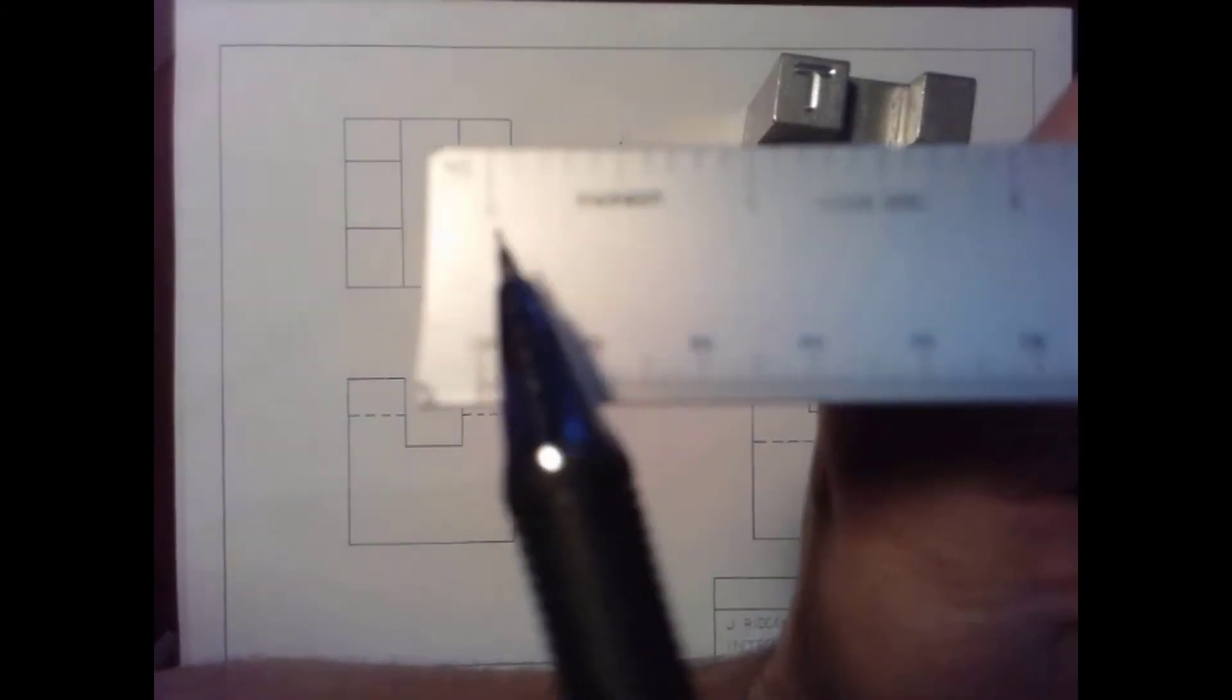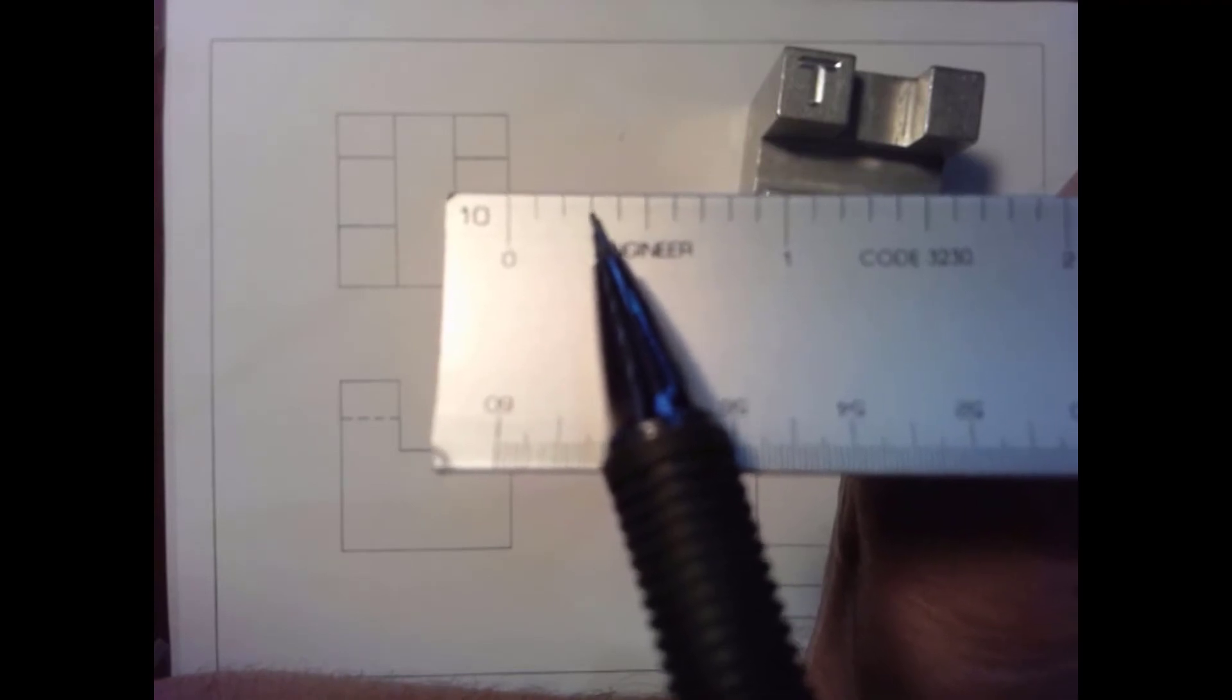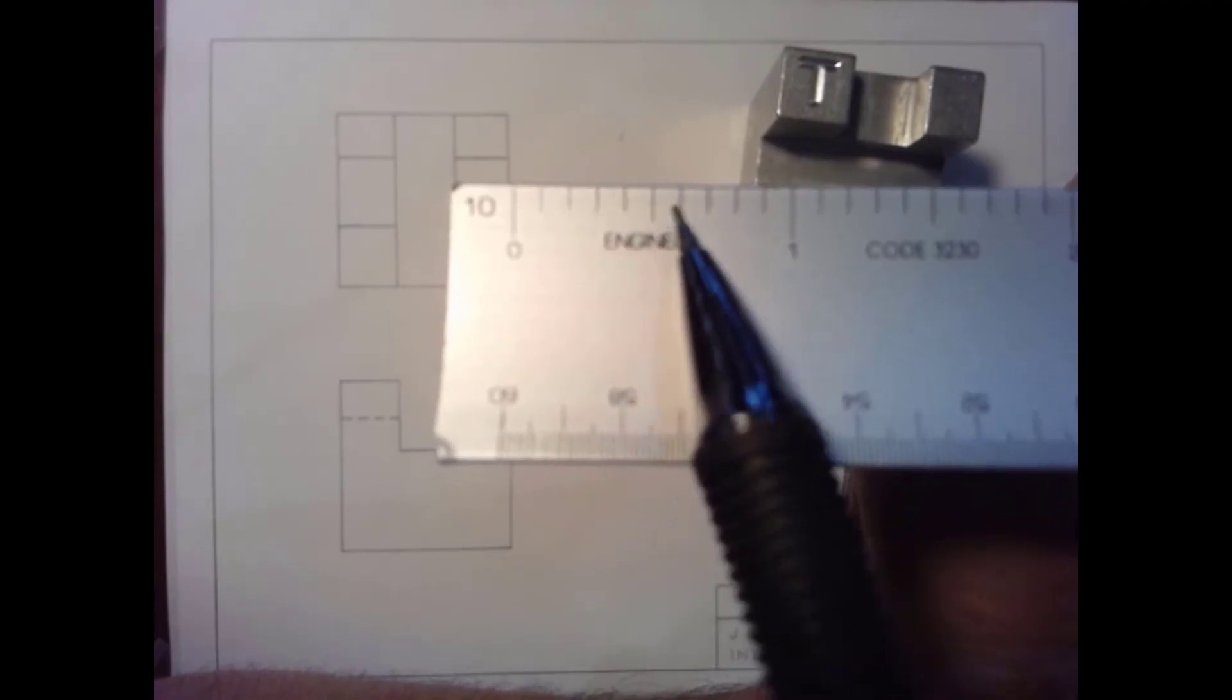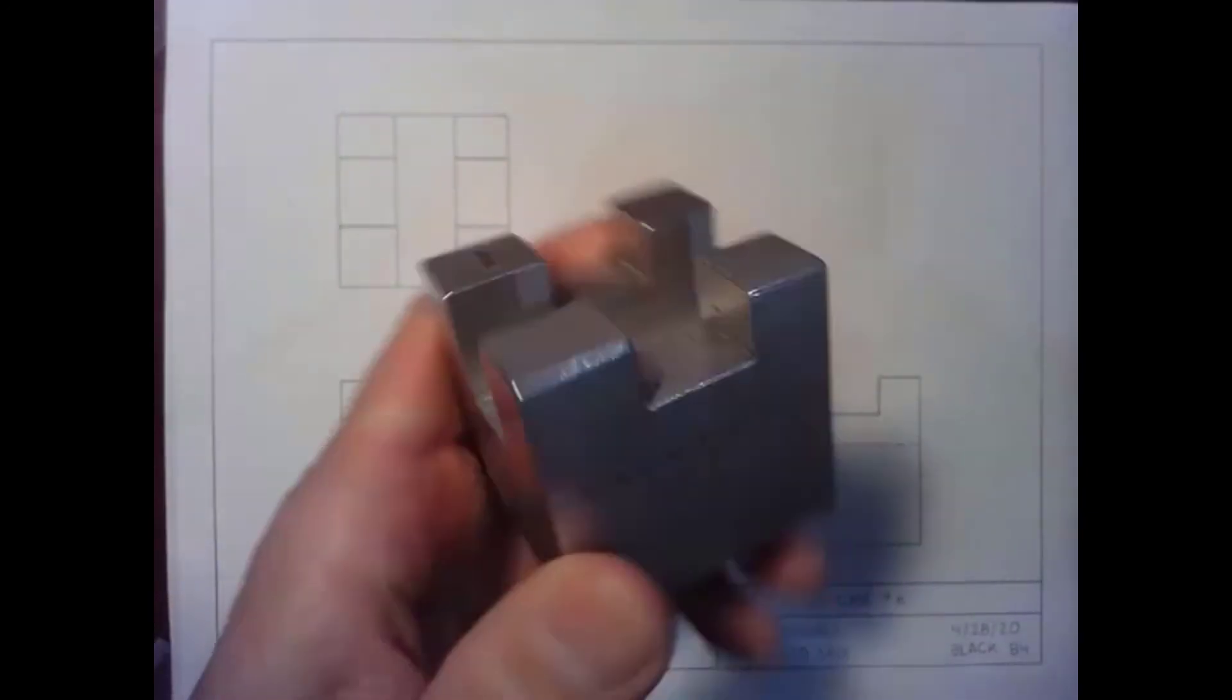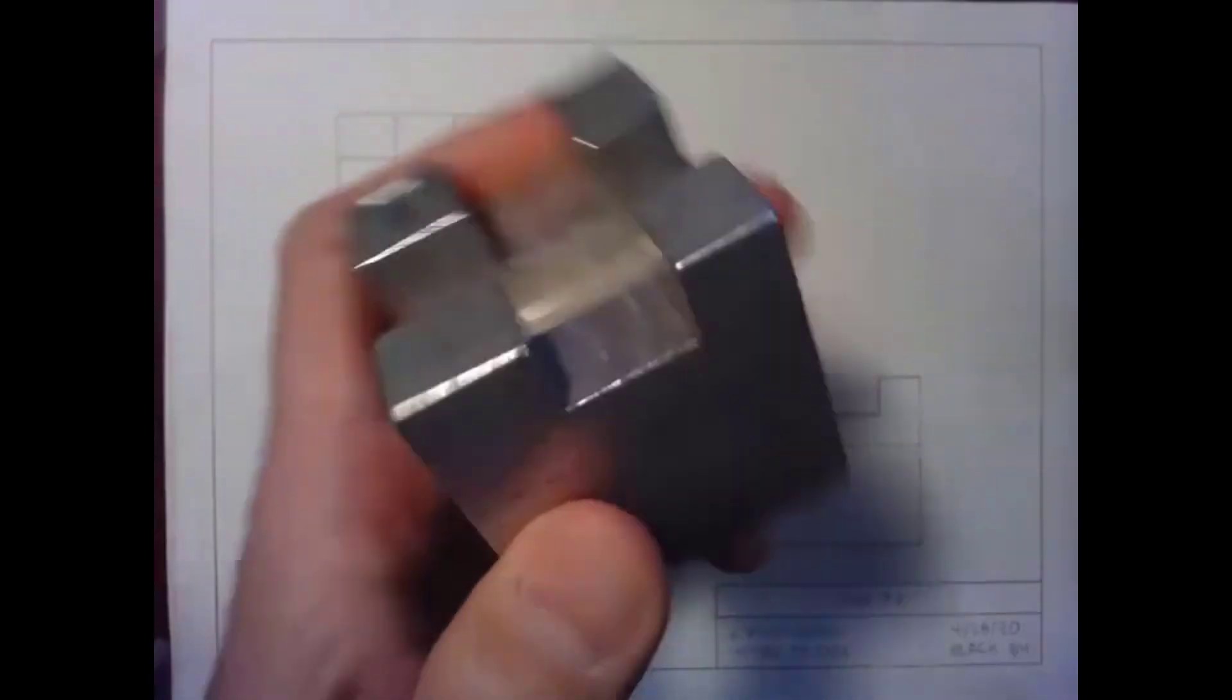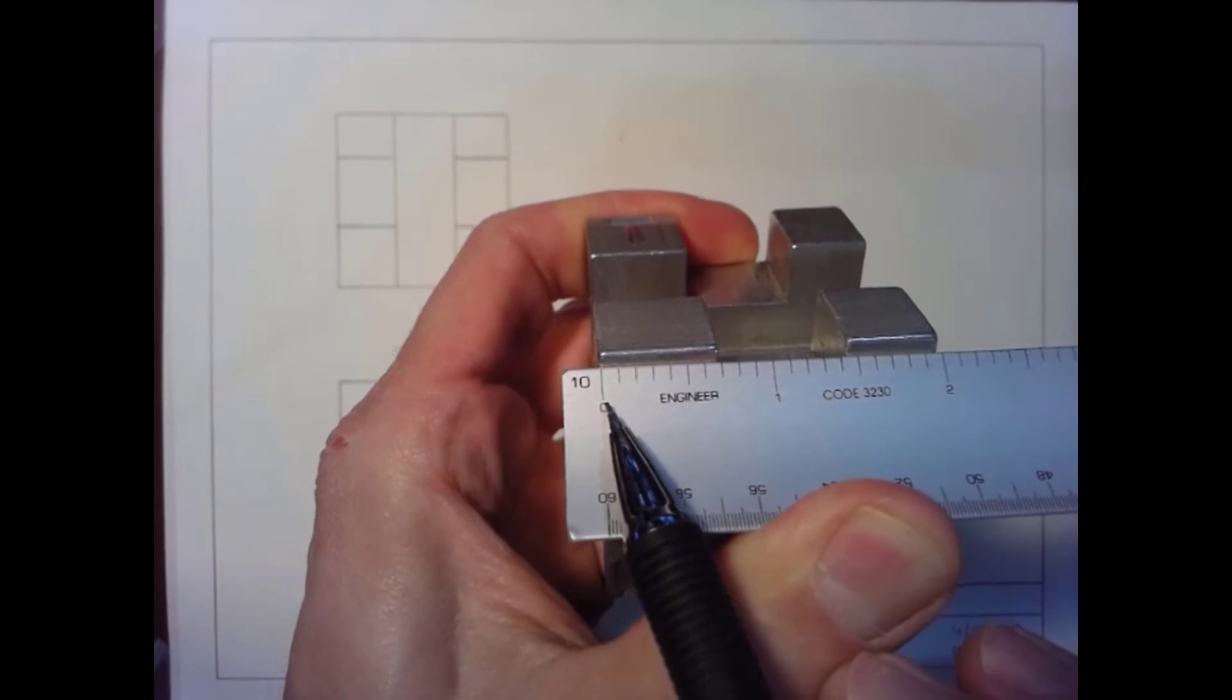However, each one inch segment is divided into one tenth of an inch segment. So there are ten tenth of an inch segments in each one inch. So when we're measuring our features, when we count each line on a ruler, it represents one tenth.